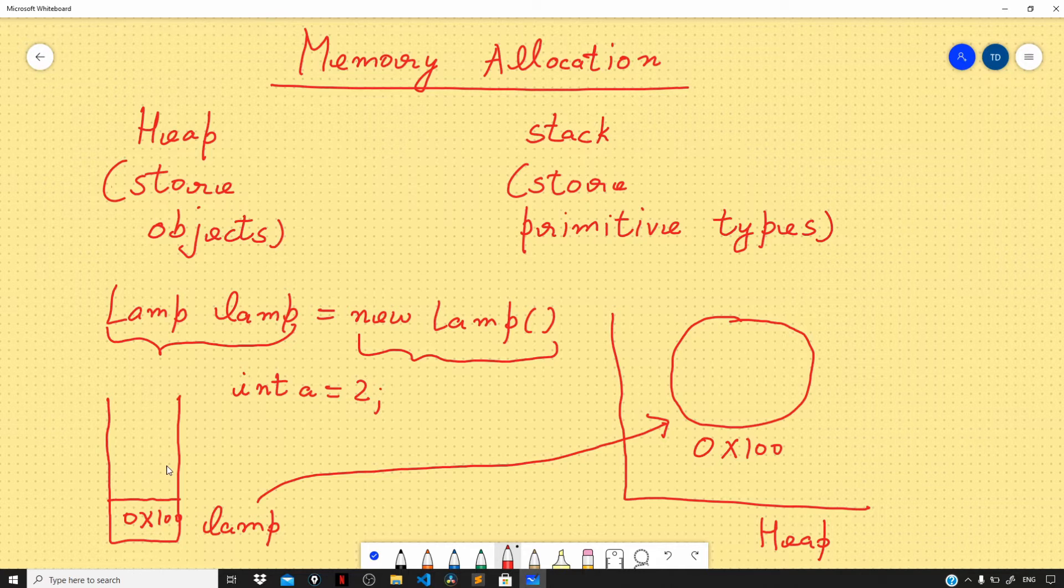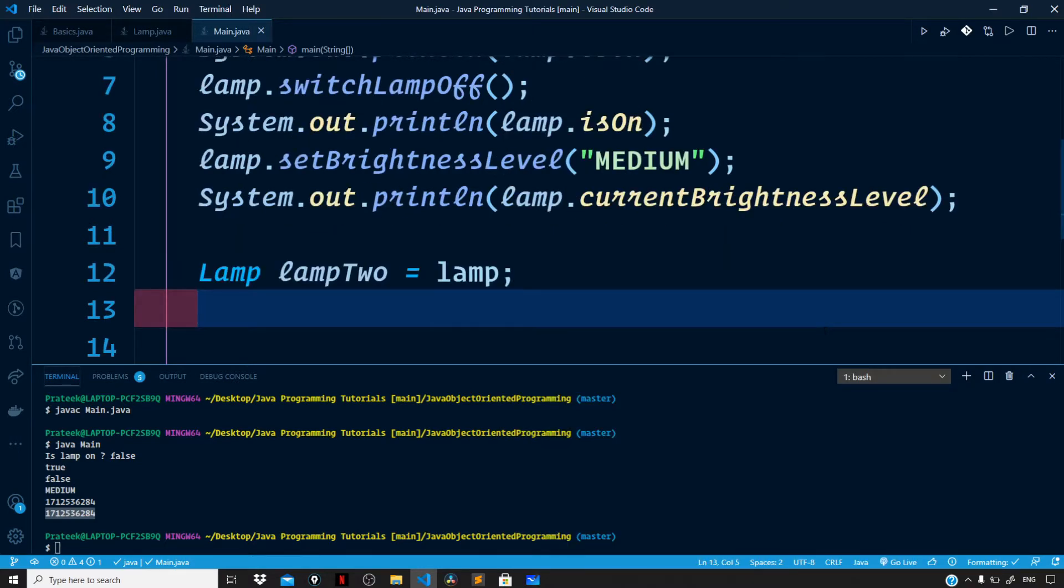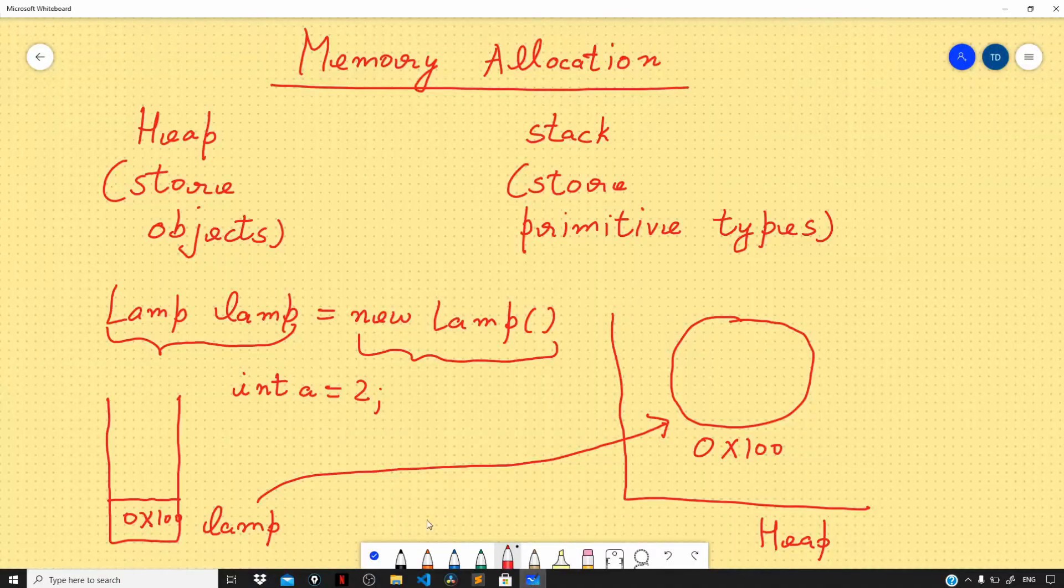Now let's do one interesting thing. Let's go back to our code and create a new instance of the lamp class. Right inside our main class, let's declare another lamp variable: 'Lamp lamp2' and set this to the lamp instance that we had earlier created.